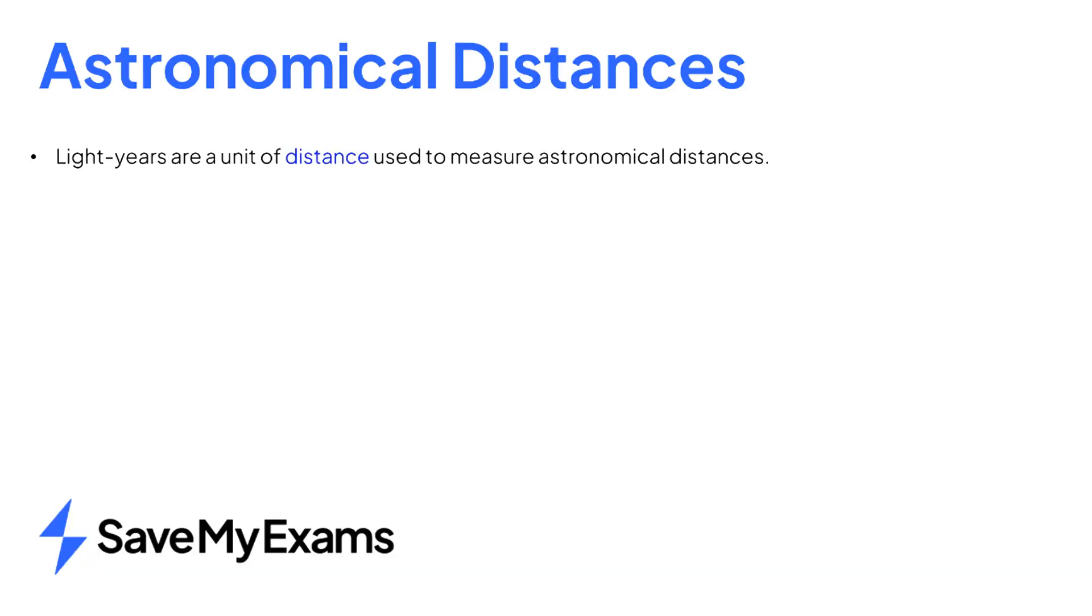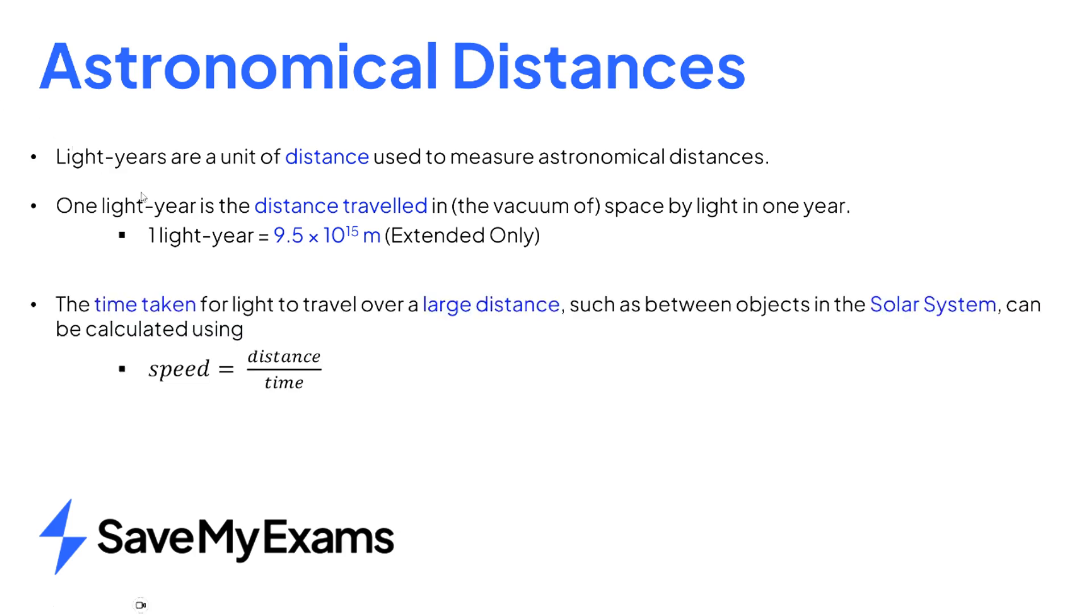In summary, astronomers use light years as a unit of distance between interstellar objects. One light year is defined as the distance travelled in the vacuum of space by light in one year. Students taking the extended paper should know the conversion between light years and meters. The familiar equation speed equals distance over time can be used for calculations involving light in the solar system. This uses the fact that the speed of light is a constant everywhere in the universe.